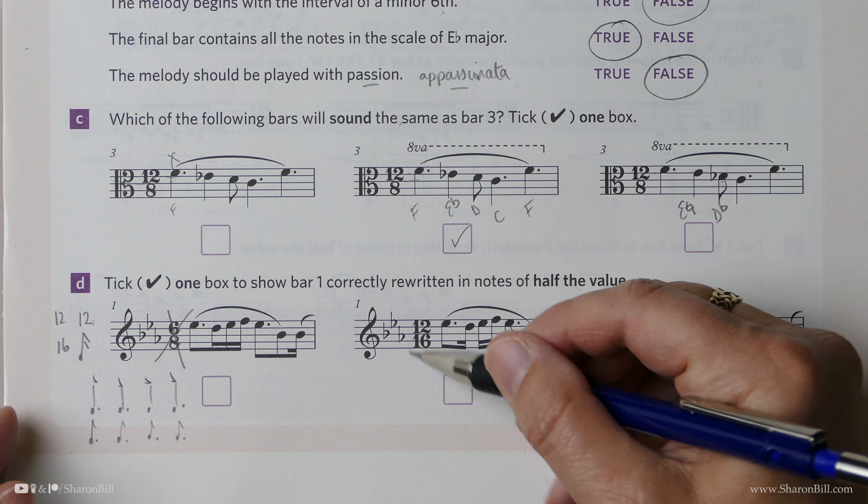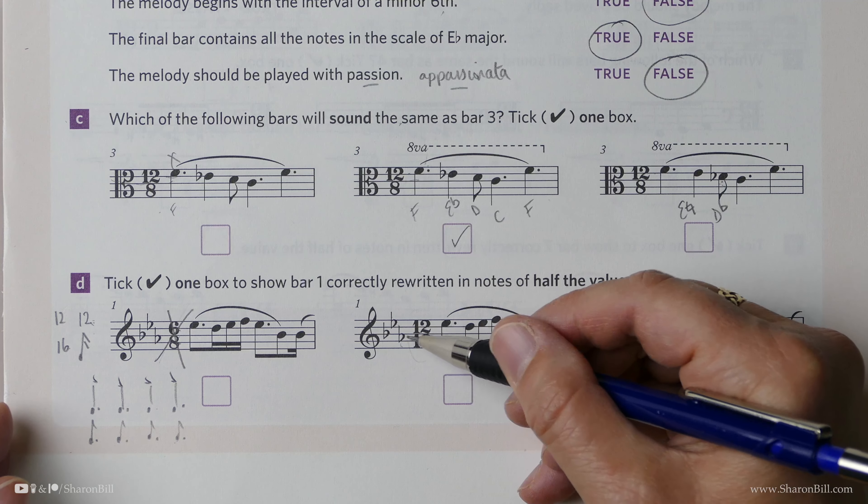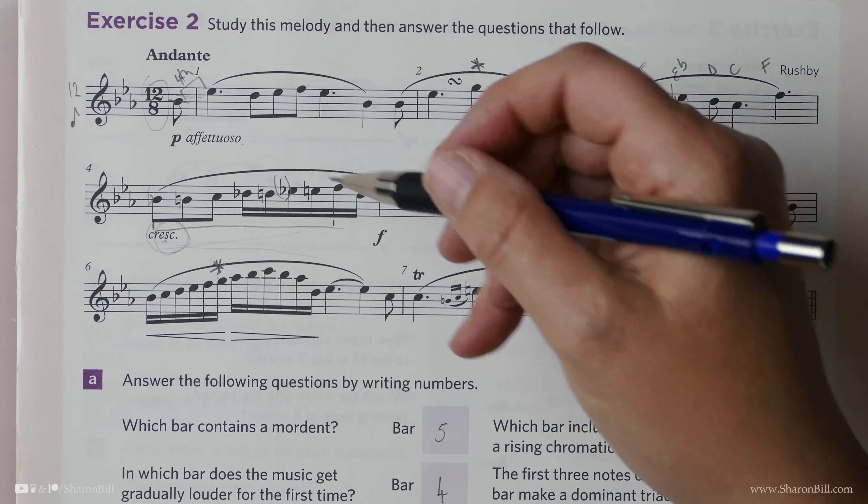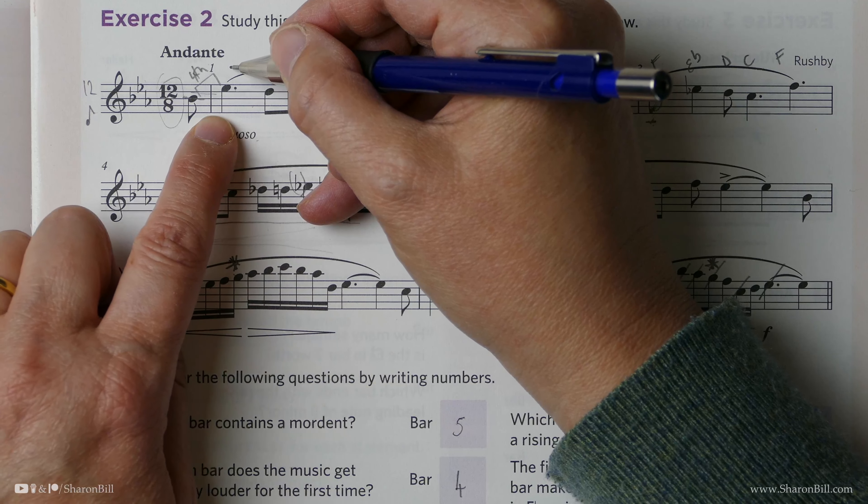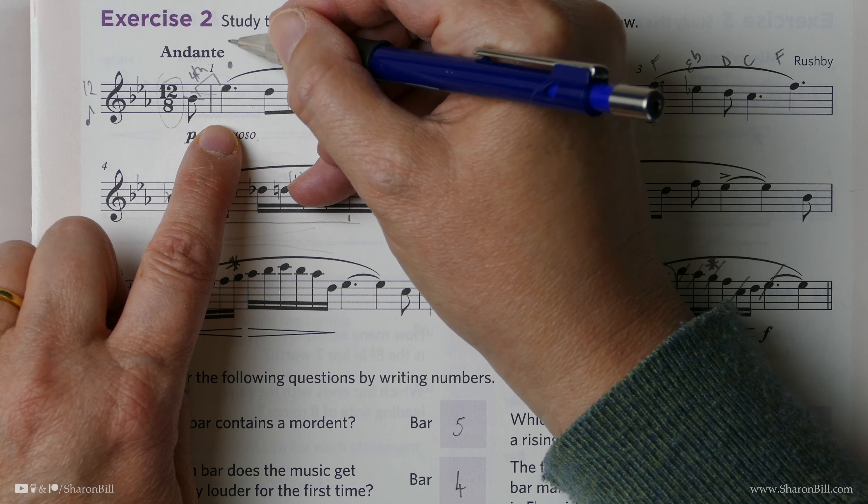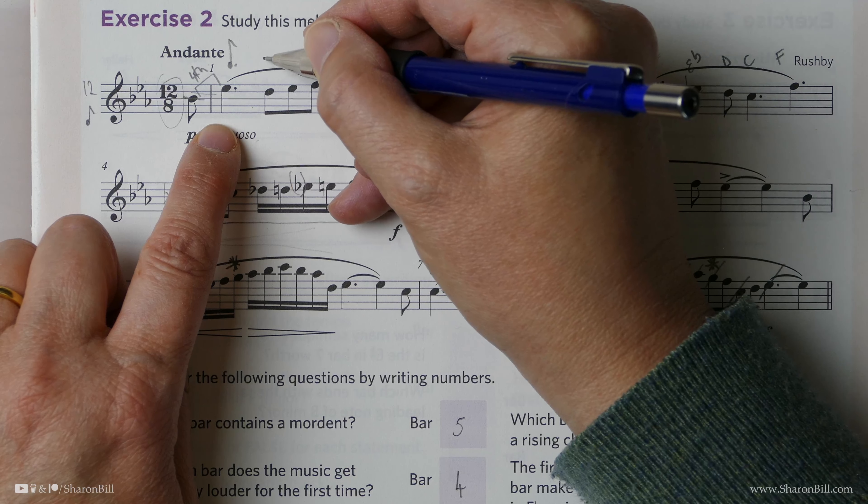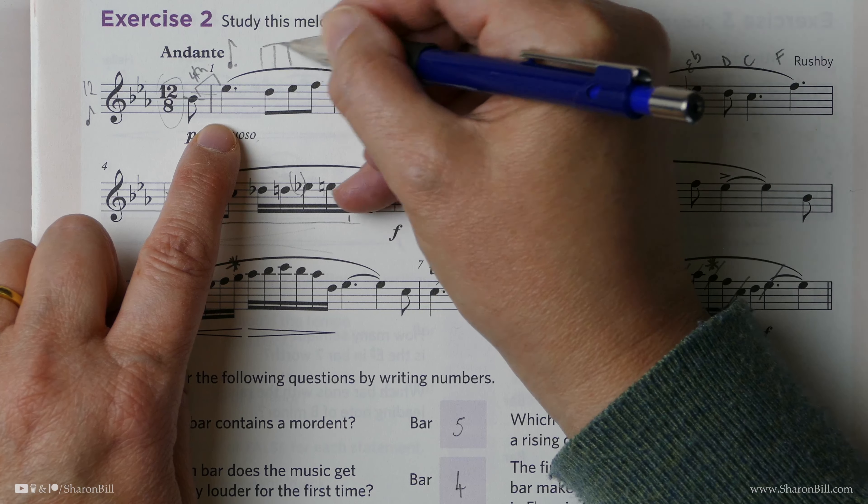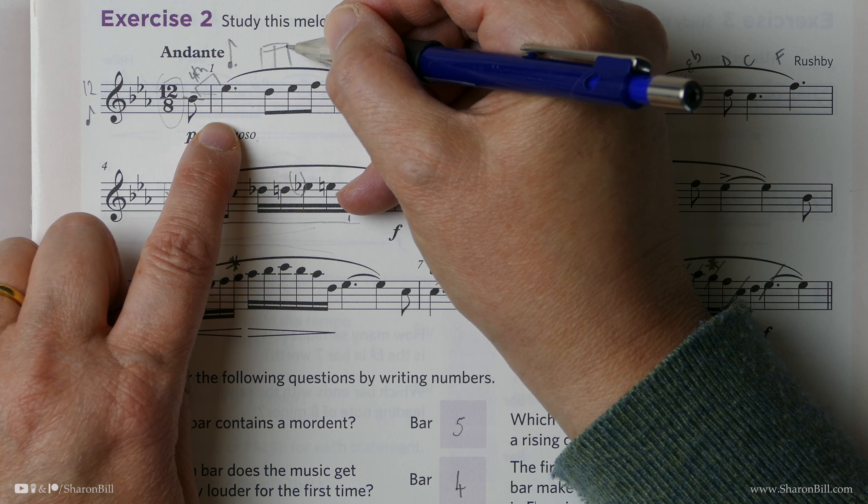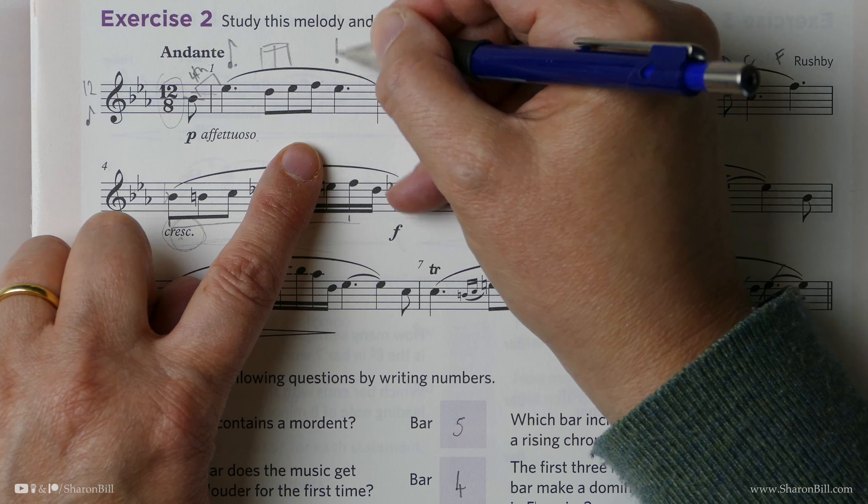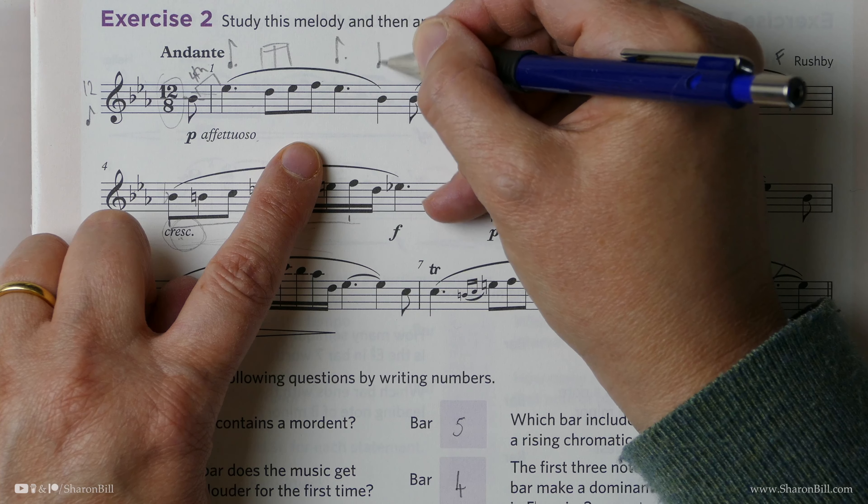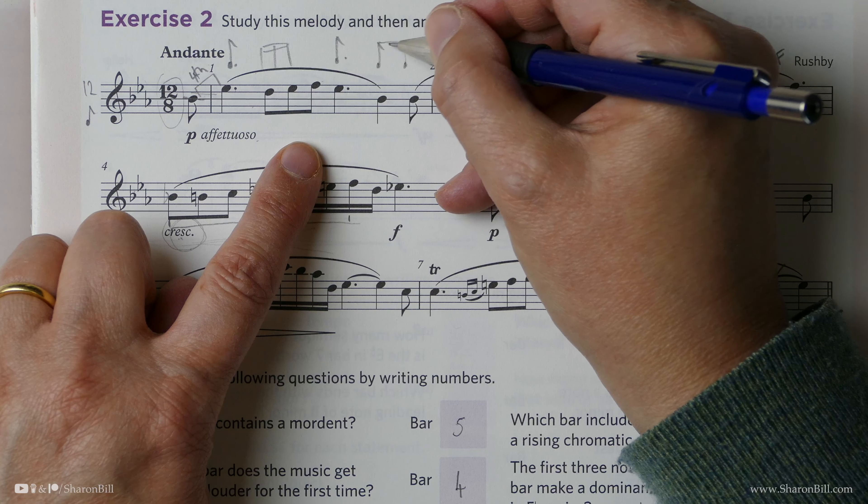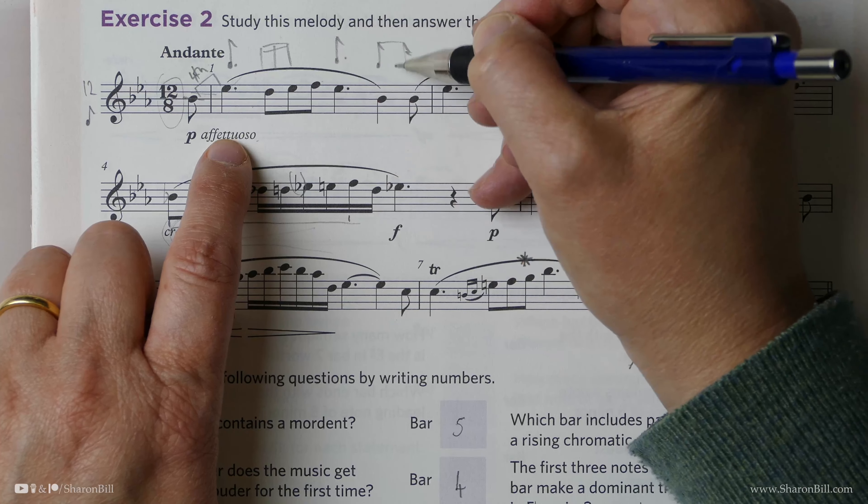However, this one looks like it's the correct time signature and key signature. But let's look at the notes. So what should this look like? Halved. And so we should have a dotted quaver with 3 semi-quavers. And then a dotted quaver. And then a quaver and semi-quavers. So they will be beamed. So there's our 1, 2, 3, 4.